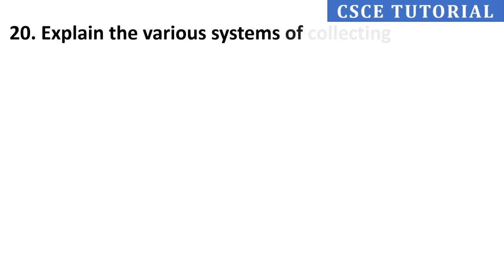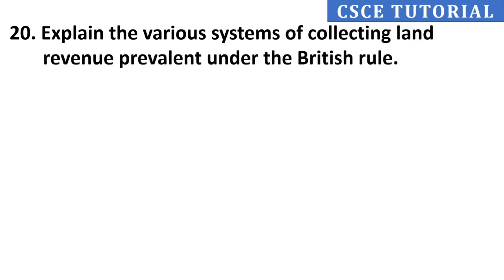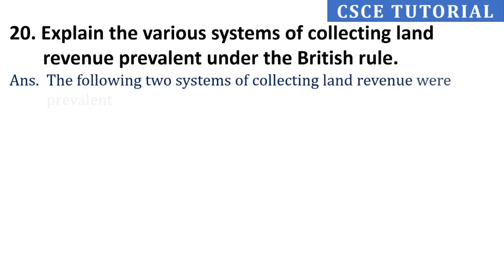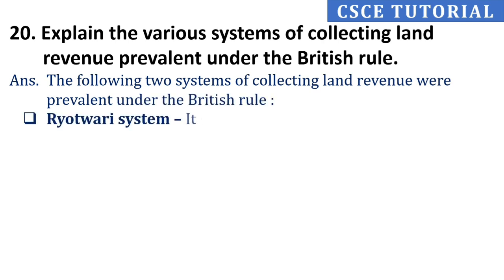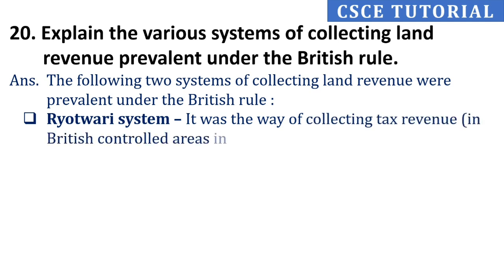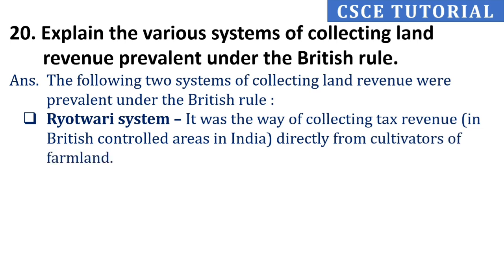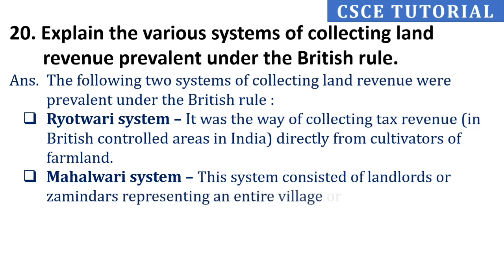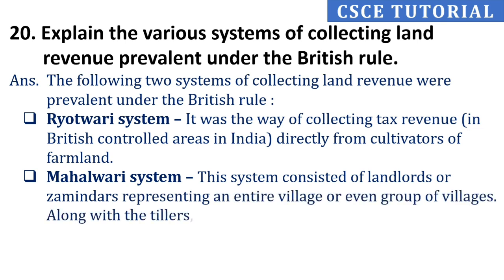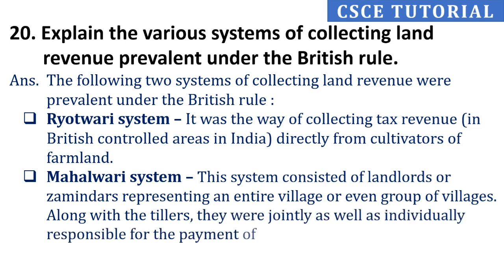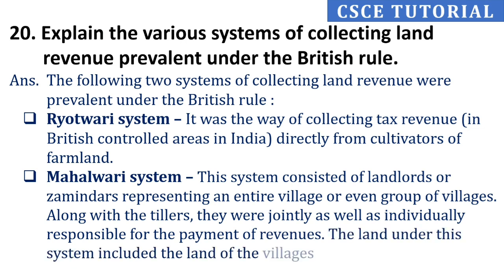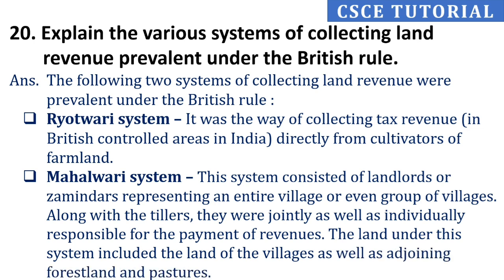Twentieth question: Explain the various systems of collecting land revenue prevalent under British rule. Its answer is, two systems were prevalent. First, the Ryotwari system — it was the way of collecting tax revenue directly from the cultivators of farmland in British-controlled areas. Second, a system where landlords represented an entire village or group of villages and were jointly as well as individually responsible for payment of revenues. The land under this system included the village land as well as the adjoining forest land and pastures.